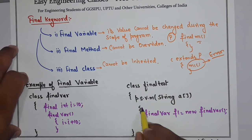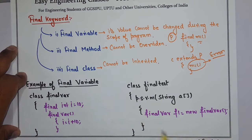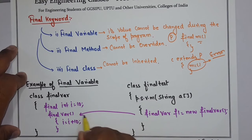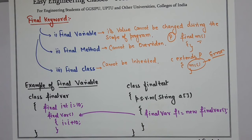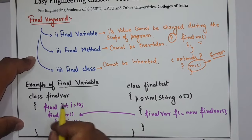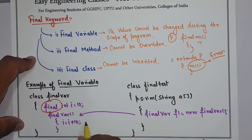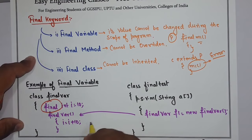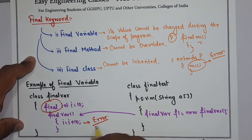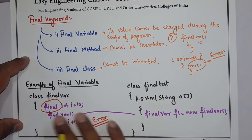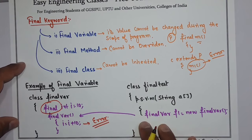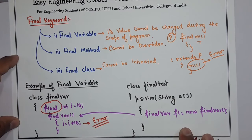In the main class, I called the constructor of this class. The constructor will come here and try to increment the value of i from 10, but since i is final, you cannot change its value. You will get an error or exception saying: cannot assign a value to a final variable.